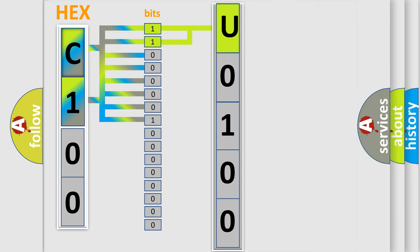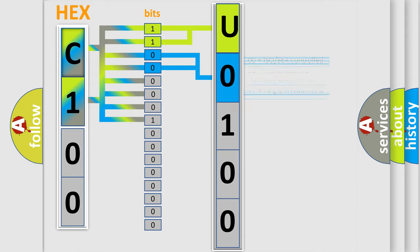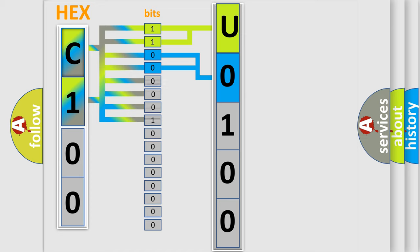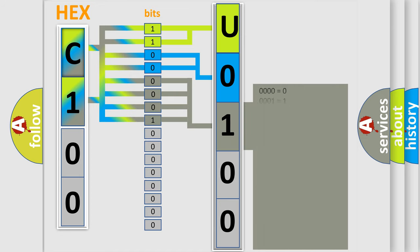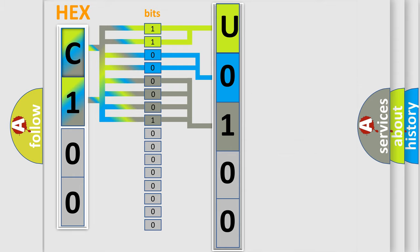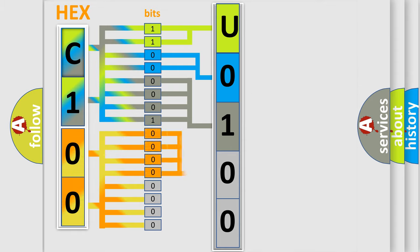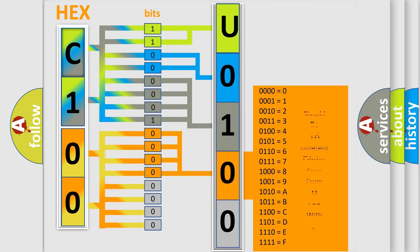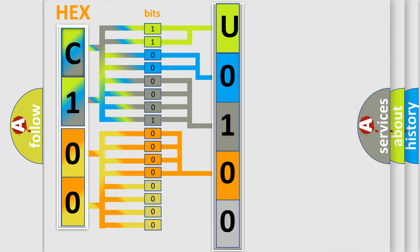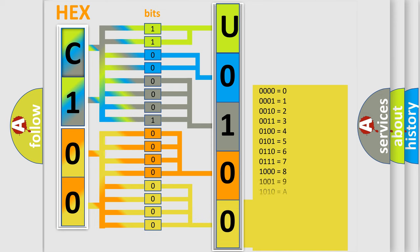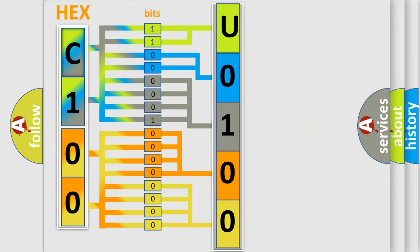The next two bits determine the second character. The last four bits of the first byte define the third character of the code. The second byte is composed of a combination of eight bits. The first four bits determine the fourth character, and the combination of the last four bits defines the fifth character. A single byte conceals 256 possible combinations.